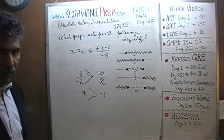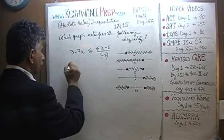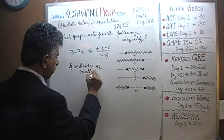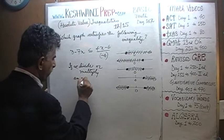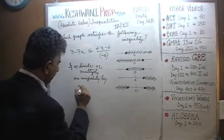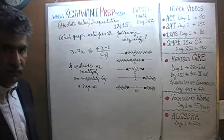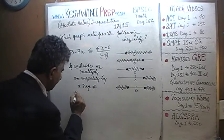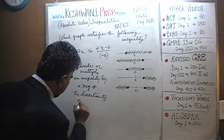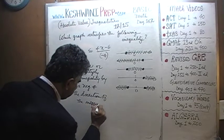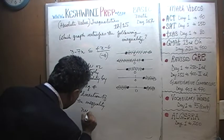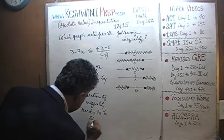If we divide or multiply an inequality by a negative number, the direction of the inequality needs to be switched.